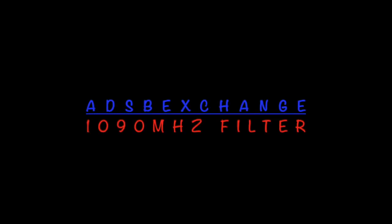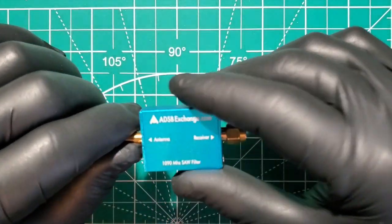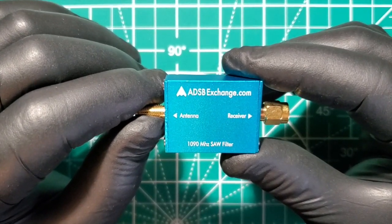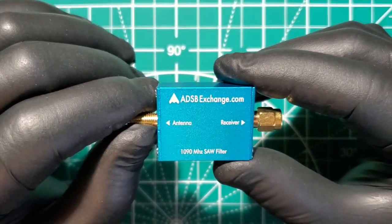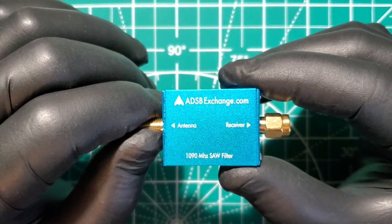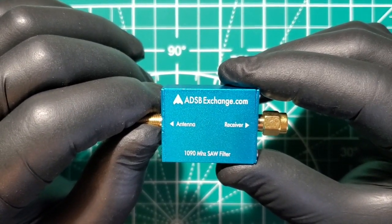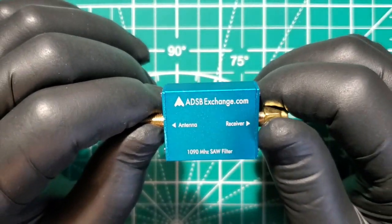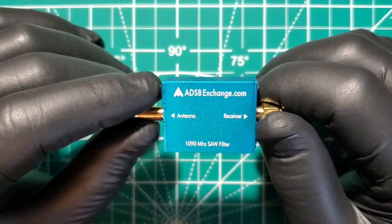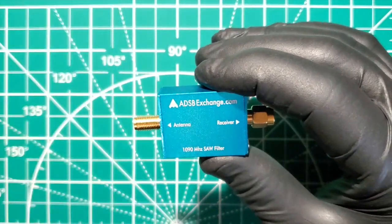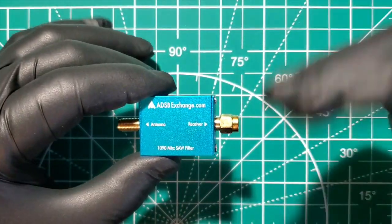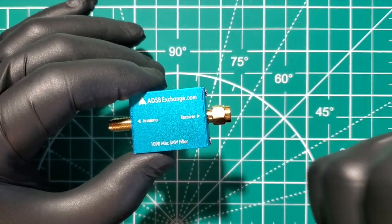Alright, Fuzz Pie Guy here. You're looking at the ADSB Exchange dot com 1090 megahertz SAW filter. This is for ADSB, so if you're using a Raspberry Pi hooked up